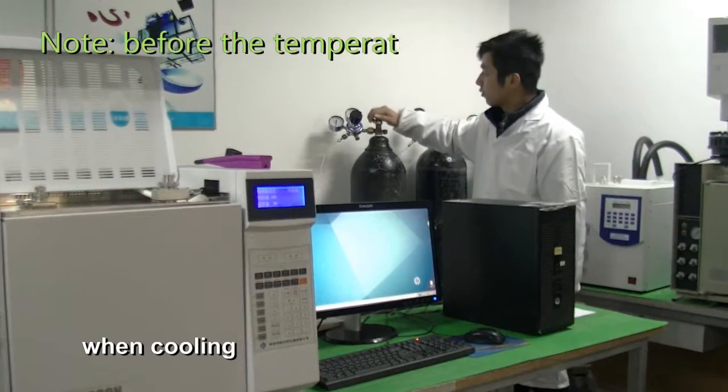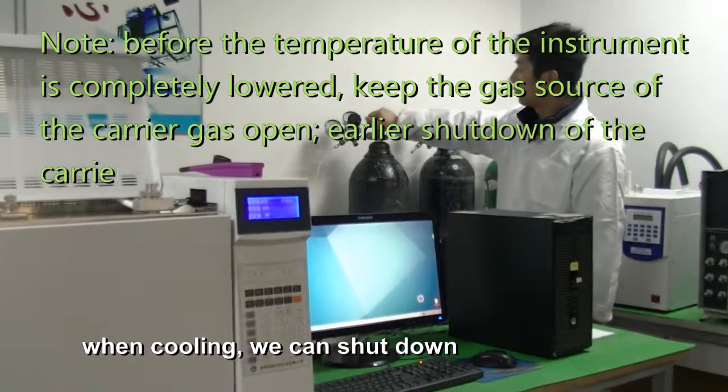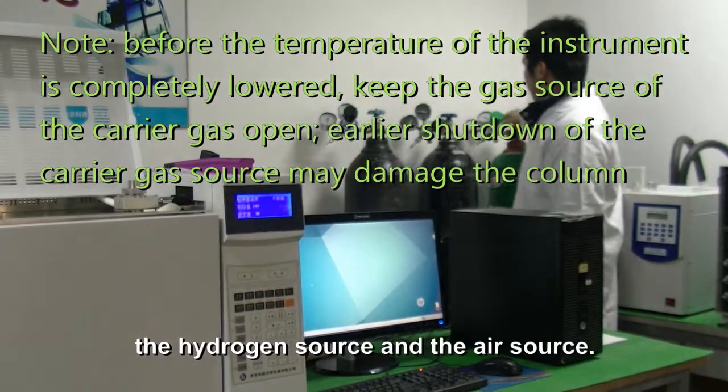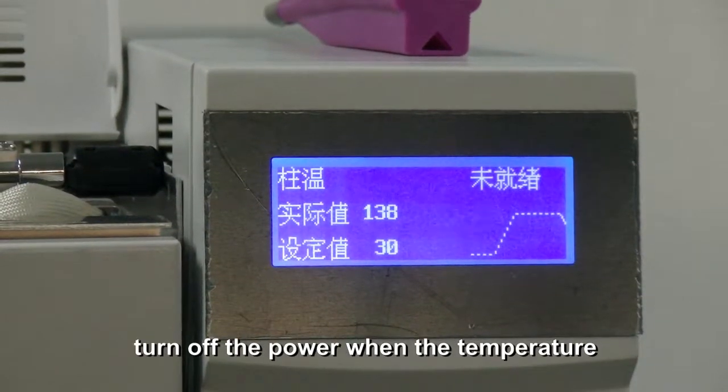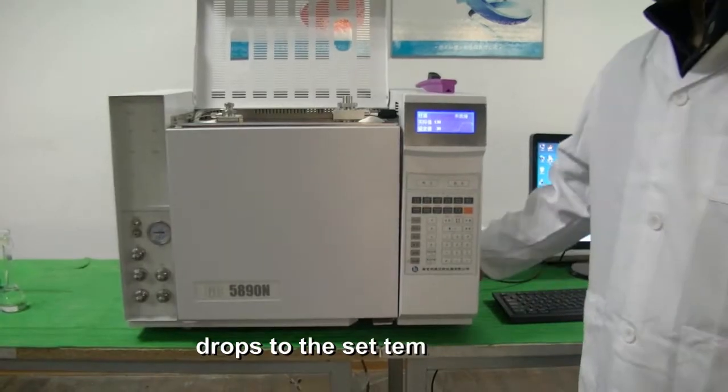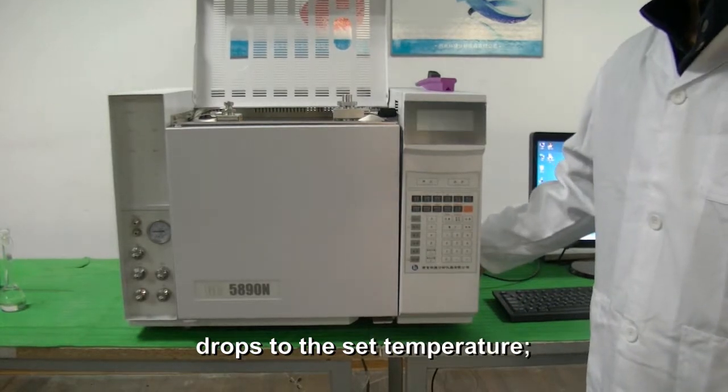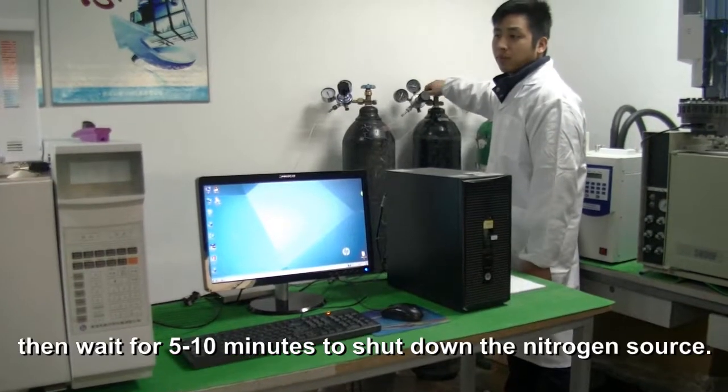When cooling, we can shut down the hydrogen source and the air source. Turn off the power when the temperature drops to the set temperature, and wait 5 to 10 minutes to shut down the nitrogen source.